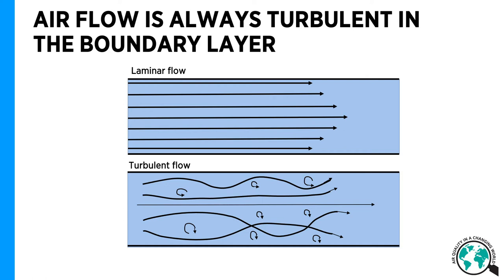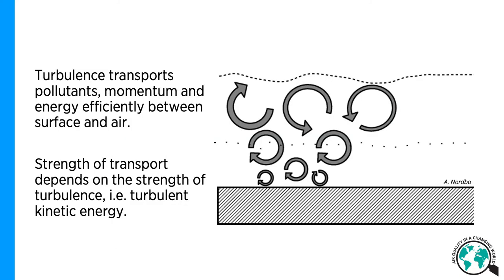In the boundary layer, air flow is always turbulent. This means that the streamlines of the flow are not parallel to each other, as shown by the top figure which describes laminar flow, but rather the flow is a turbulent 3D motion consisting of different sizes of whirls, also called eddies. Turbulence is a very efficient transporter of energy, momentum, and mass between the surface and the atmosphere — mass includes also air pollutants. The strength of the turbulent transport depends on the strength of the turbulence, which is the kinetic energy that turbulence has.